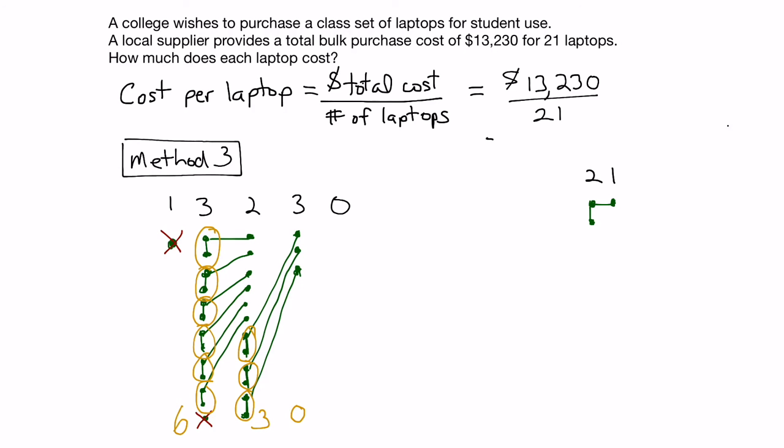So the cost per laptop in our case here, using the dot method of division is 630, which matches our other two methods. And so we know we've got the right answer here. We could also verify by taking 630 and multiplying it by 21. It should give us 13,230. And there you go.